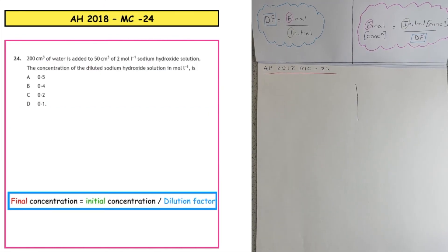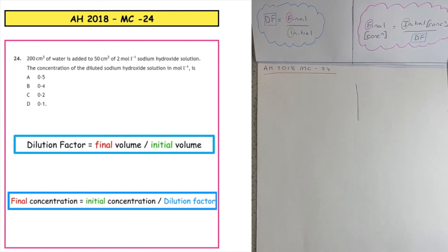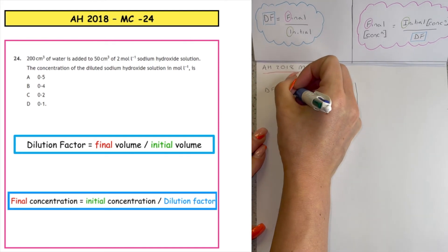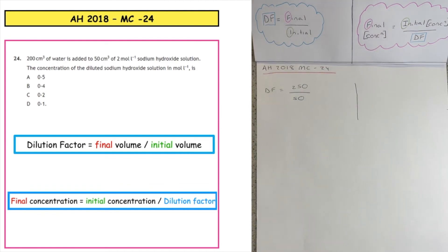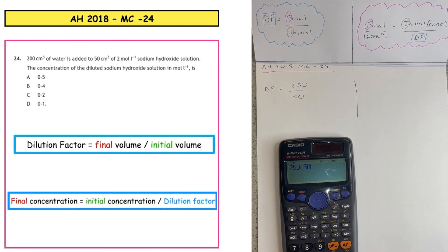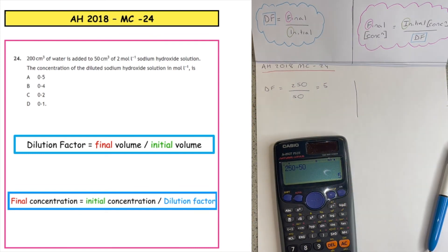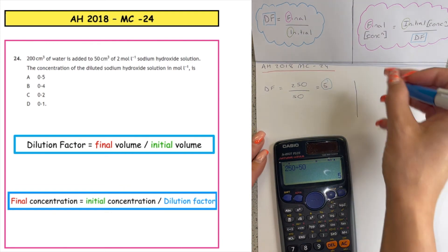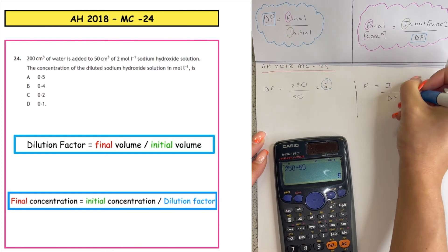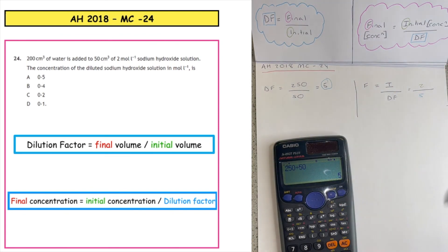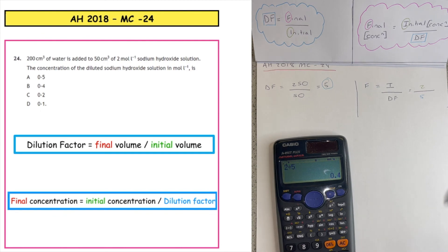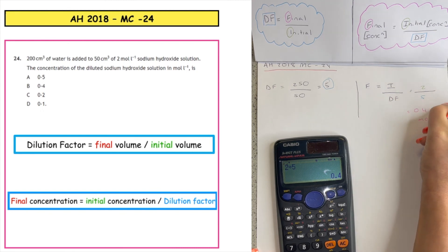This past paper question is from the Advanced Higher 2018, multiple choice 24. 200 centimetres cubed of water is added to 50 centimetres cubed of a 2 moles per litre sodium hydroxide solution. What is the concentration of the diluted solution in moles per litre? Step one: dilution factor equals final over initial. The initial is 50, and 50 plus 200 equals 250, so 250 divided by 50 gives a dilution factor of 5. Step two: final concentration equals initial concentration over dilution factor. The initial concentration is 2, so 2 divided by 5 gives a final concentration of 0.4 moles per litre, which is multiple choice answer B.